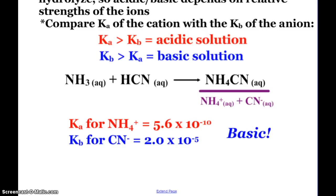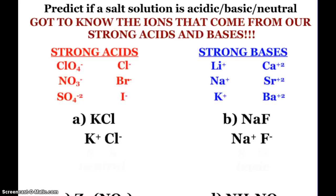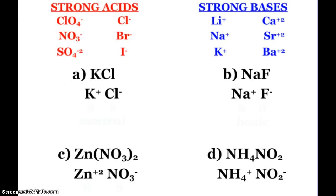What you can generally be asked to do is predict if a salt solution will be acidic, basic, or neutral. You have to know which ions come from our strongs — if you can label those, then the rest come from weaks. First prediction: potassium chloride. Potassium comes from the strong base potassium hydroxide, and chloride comes from hydrochloric acid. Two strongs give us a neutral salt solution.